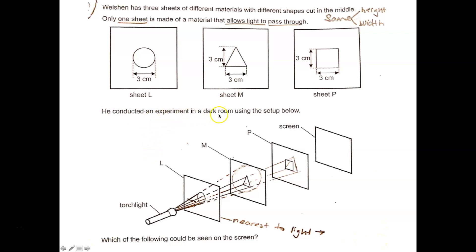So that means that if they were placed at the same distance from a light source, the size of the light that beams through should be the same. So he did an experiment in a dark room. And dark means there's no other light other than this torchlight using the following setup. Which one of the following could be seen?